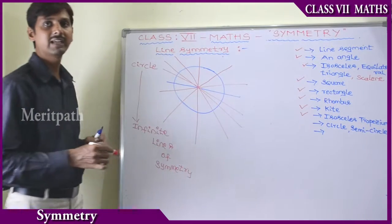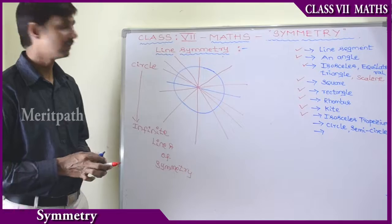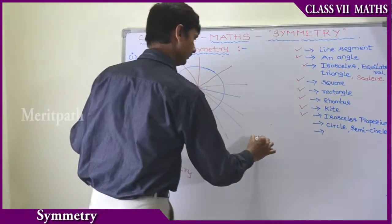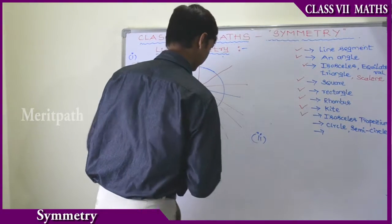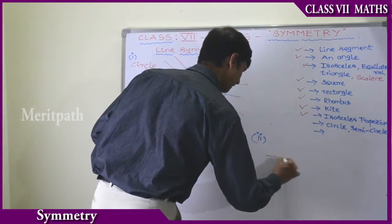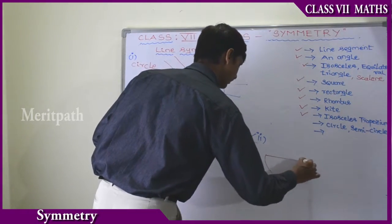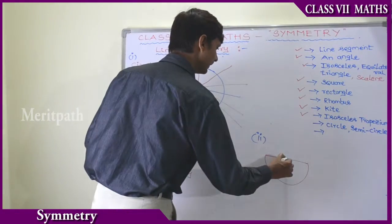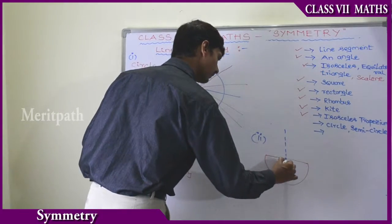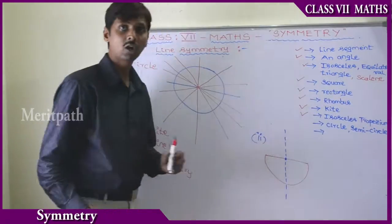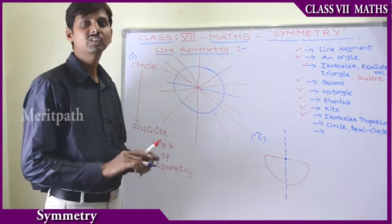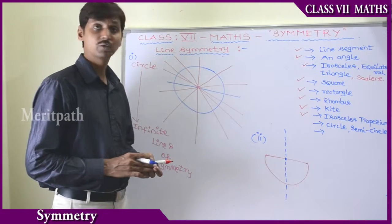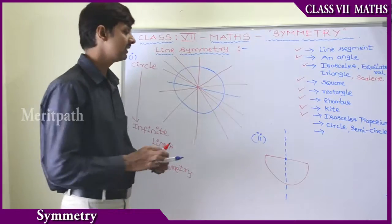Let's take a semicircle. Through the center of the semicircle, there is only one line that can be drawn which will divide it into two equal parts. So there is only one line of symmetry for a semicircle.